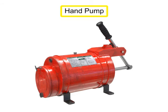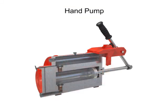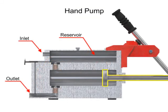Hand pumps are used when a source of power is not available or where the extra expense of a power pump isn't warranted. For example, they are used on shop presses and other portable equipment, serve as standby pumps, and serve as sources of emergency power. Hand pumps are always of piston type and are usually constructed with a piston working between two check valves.